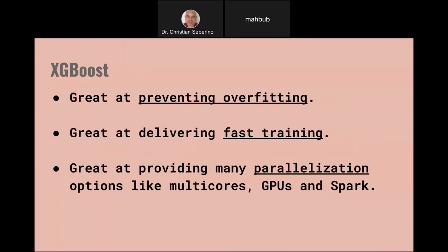Why is XGBoost getting so much attention? The issue with gradient boosted models is they're really prone to overfitting — they'll make an awesome model on the training data, but when you go to testing data or production, not so hot. XGBoost really tries hard to prevent overfitting. Also, it's really nice optimized code — great at delivering fast training with a small memory footprint. It also provides many parallelization options, so if you have multi-cores, GPUs, or Spark like a Databricks platform, XGBoost can take advantage of that to speed up training on massive models.